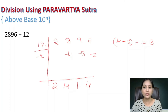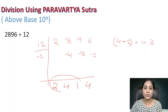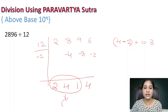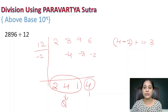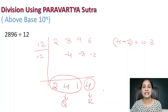Counting from the left, 1, 2, 3 — the first three digits 241 form the quotient, and 4 is the remainder of this problem. It's very simple.